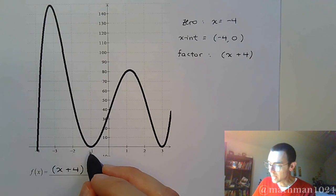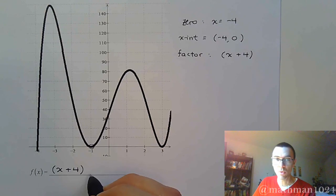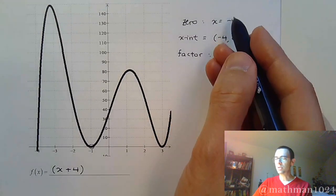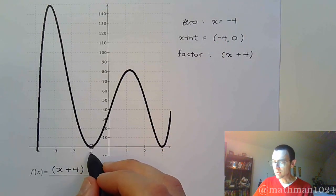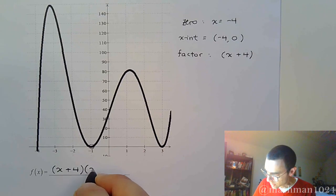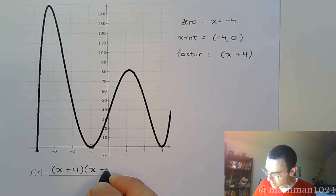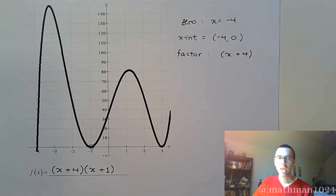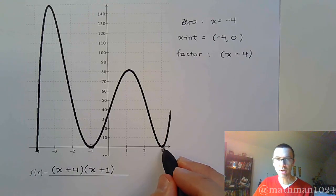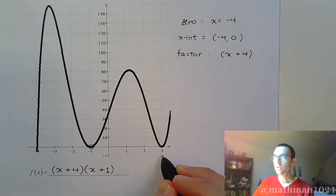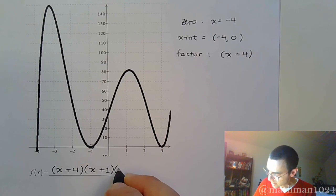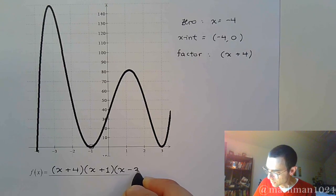Now we see that we are hitting right here at negative 1. So the same kind of thing applies right here. If it's negative 1, that means it comes from the factor x plus 1. And then you see that we're hitting and bouncing off right here when x equals 3. So if it's x equals 3, flip the sign around, that's going to be x minus 3.